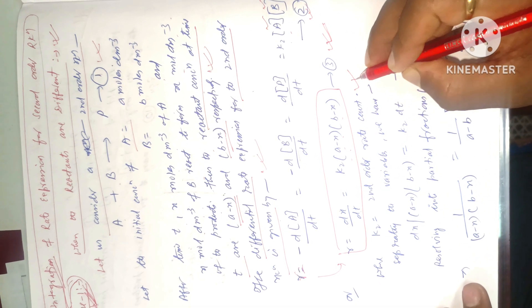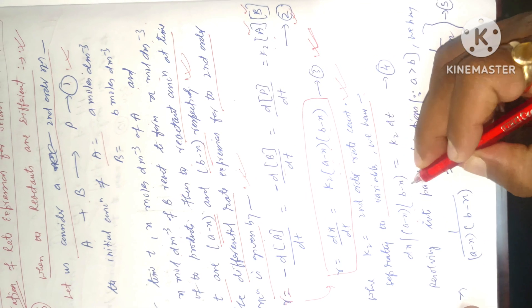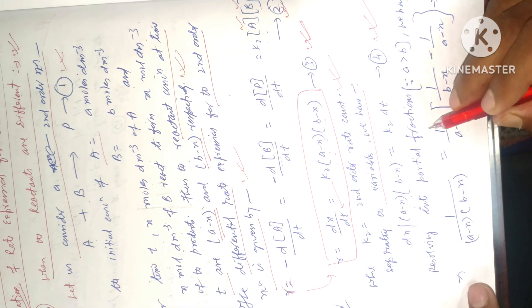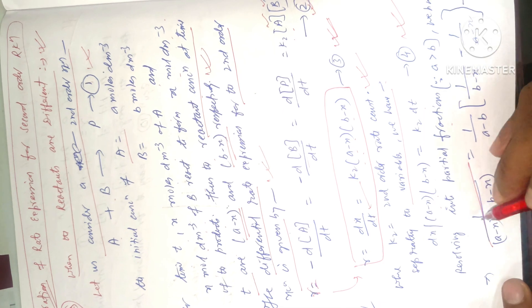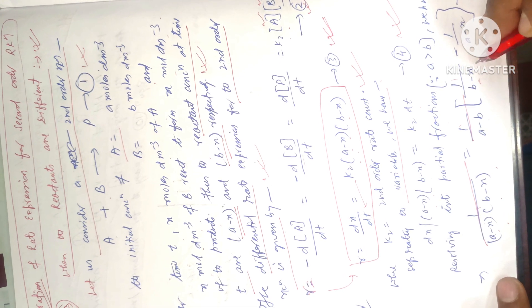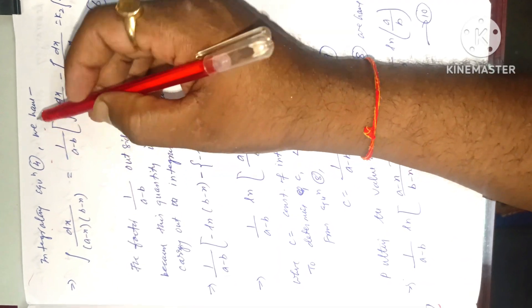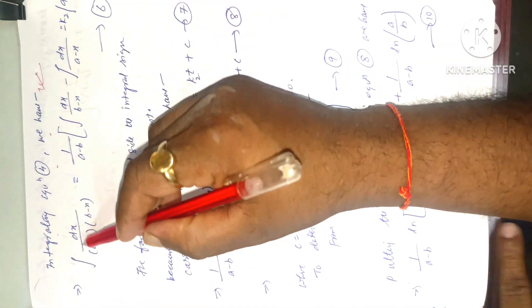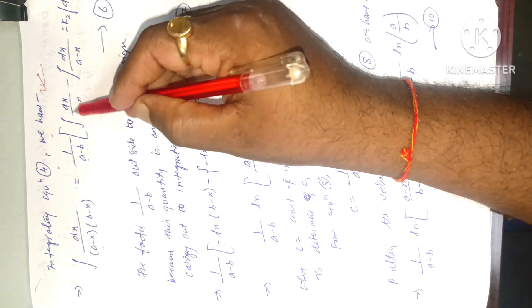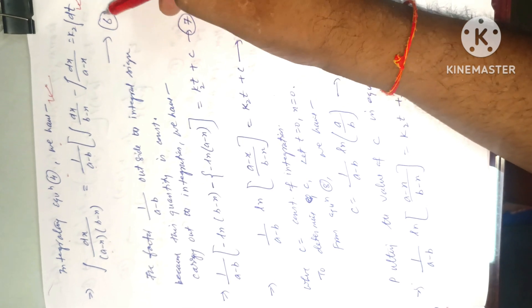Separating the two variables, we have: dx / [(a − x)(b − x)] = k₂ dt, equation 4. Resolving into partial fractions, since a is greater than b, we have: 1 / [(a − x)(b − x)] = 1/(a − b) × [1/(b − x) − 1/(a − x)], equation 5. Integrating equation 4, we get equation 6.